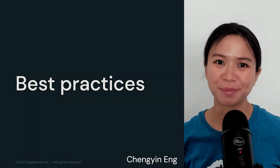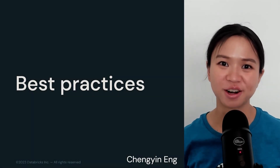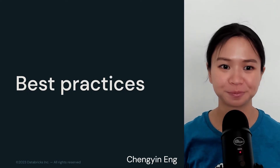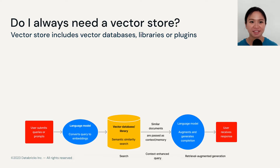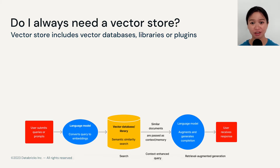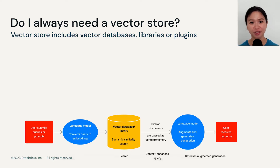Let's conclude this module with some best practices around using vector stores and implementing your own search retrieval system. This is probably the biggest elephant in the room: whether or not you should always use a vector store. Many of you have probably been storing your unstructured data in a regular database, and it's probably working well so far. So if that's you, you don't have to feel like you have to scramble to suddenly include a vector database in your architecture.